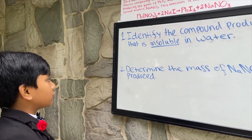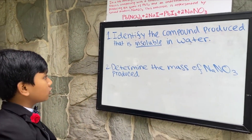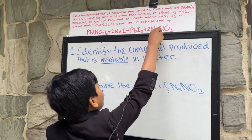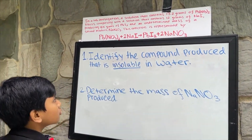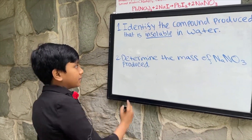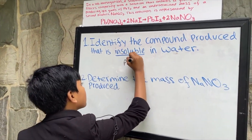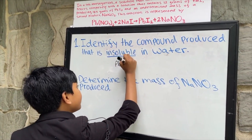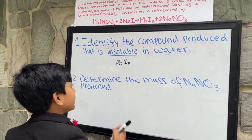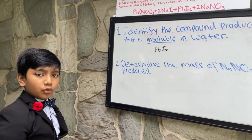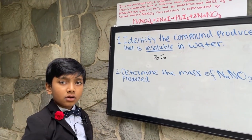Identify the compound produced that is insoluble in water. Well, this is a group 1 ion — sodium — so it has to be lead iodide. Any of the halogens becomes insoluble when you add lead or silver.